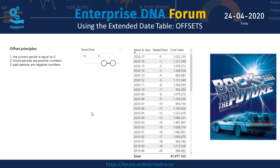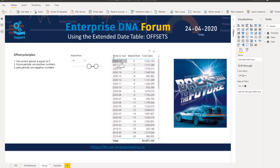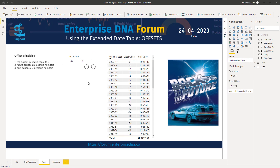Let's recap the mechanics again briefly. For all intents and purposes, today is the 24th of April 2020. I have a slicer on my page which contains the week offset value, and it now shows all values from minus 53 up to zero, meaning the current week. April 24th is in week 17.